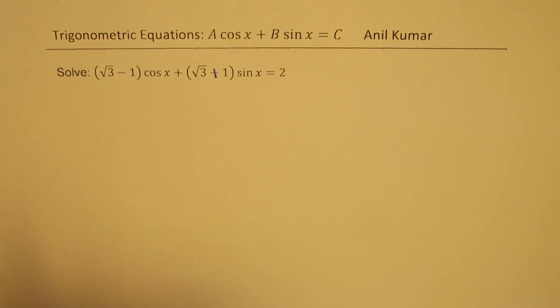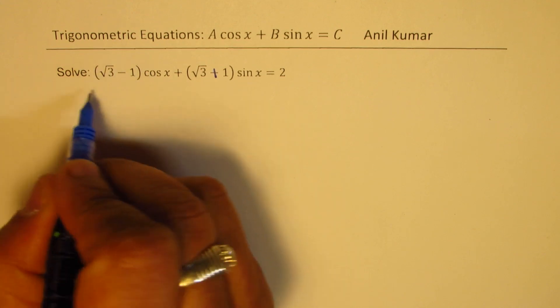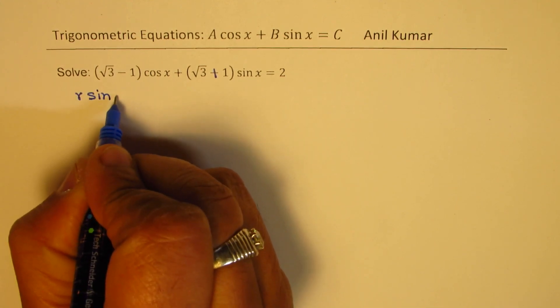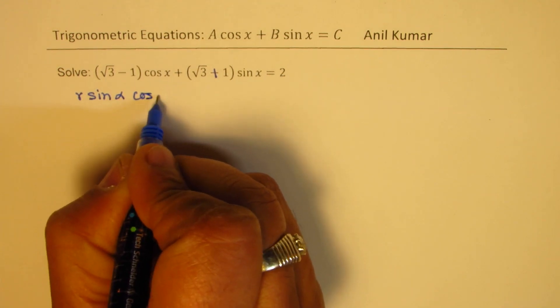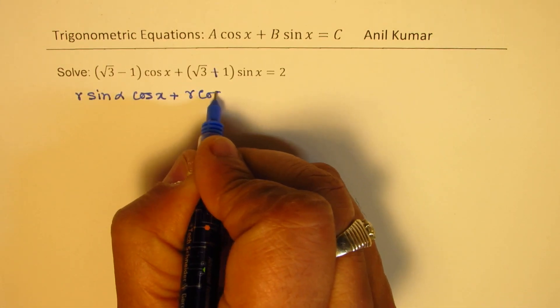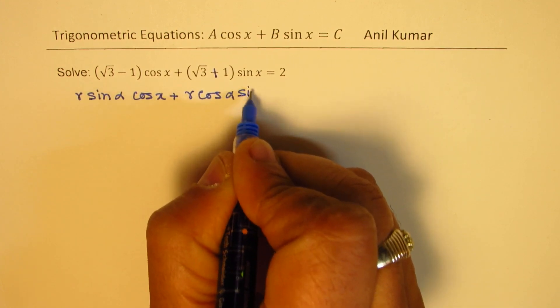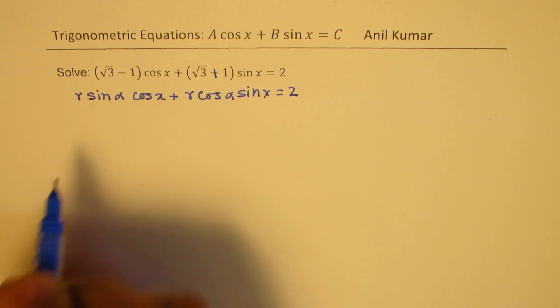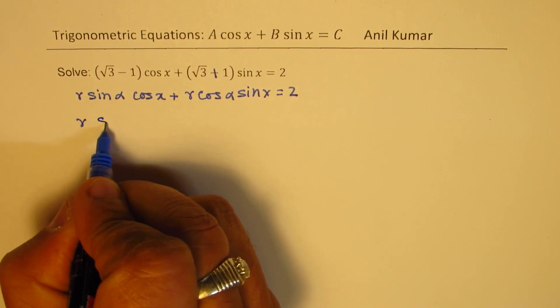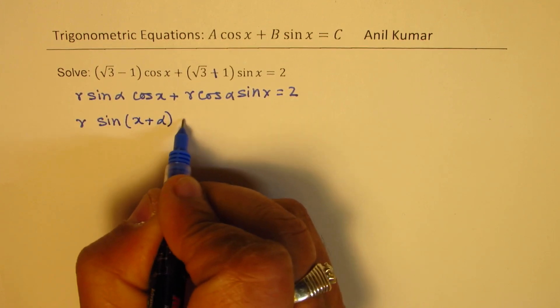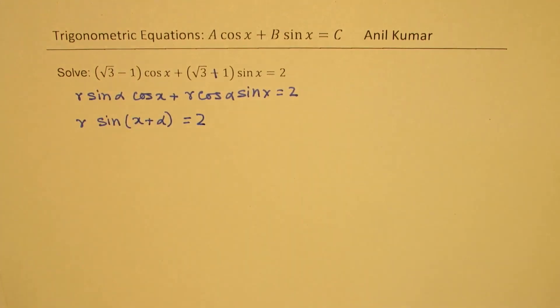Now to solve this equation, we'll like to write this in terms of sine. So I want to make a substitution so that I could write this as r sine alpha cos x plus r cos alpha sine x equals to 2. Once I do that substitution, I can always write this as r sine of x plus alpha equals to 2. So that's the whole idea.